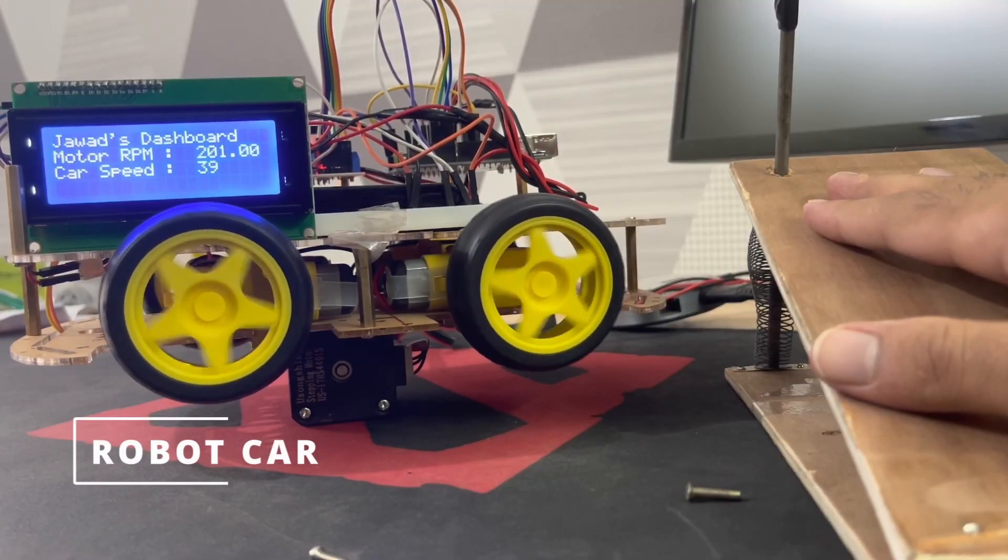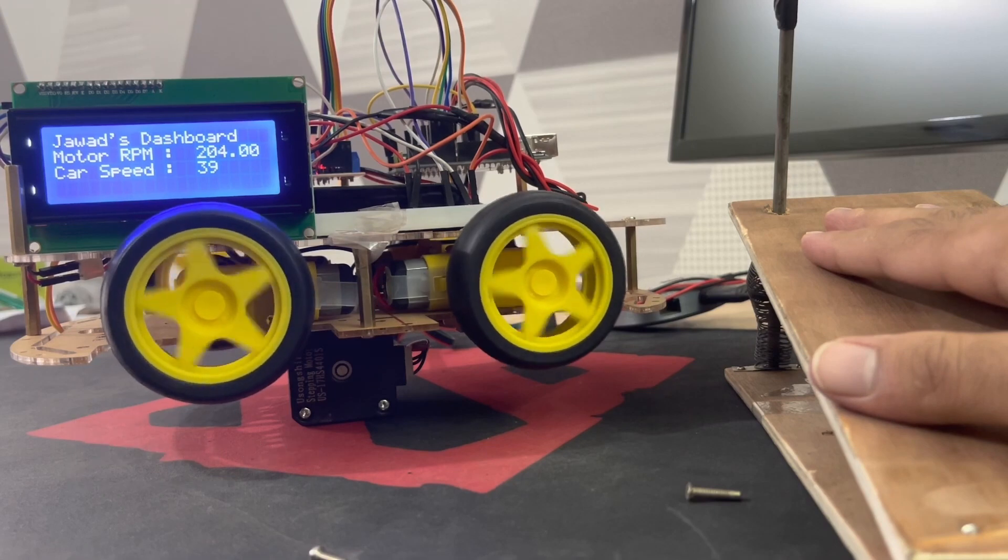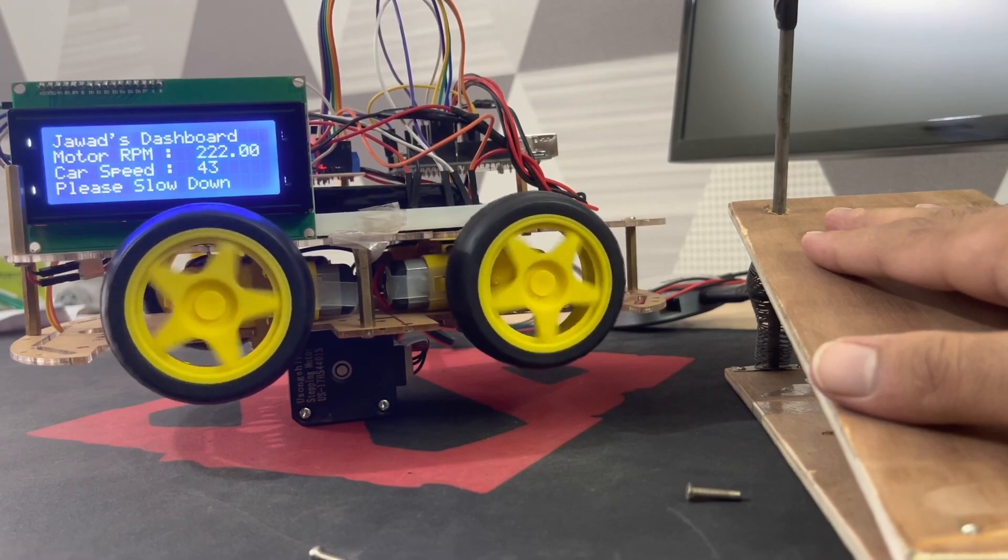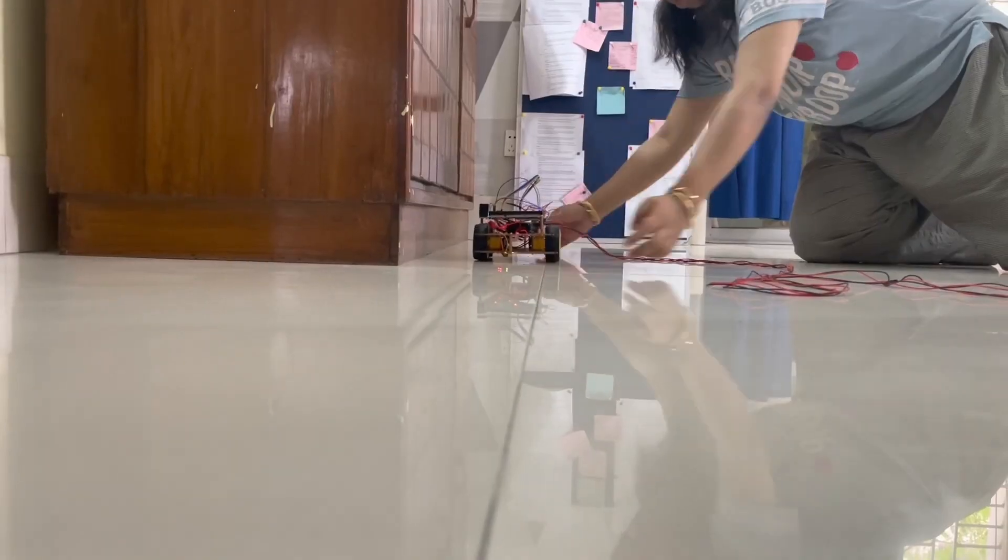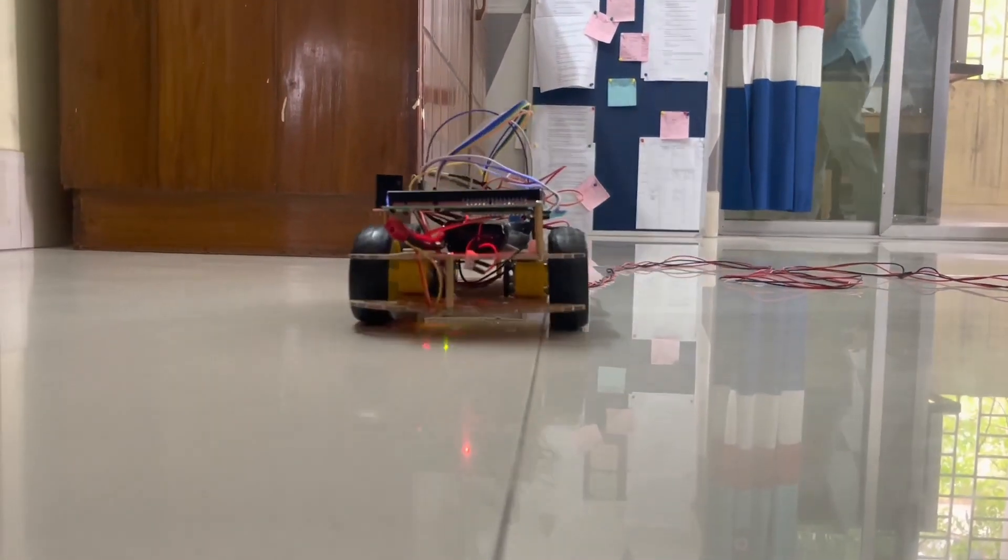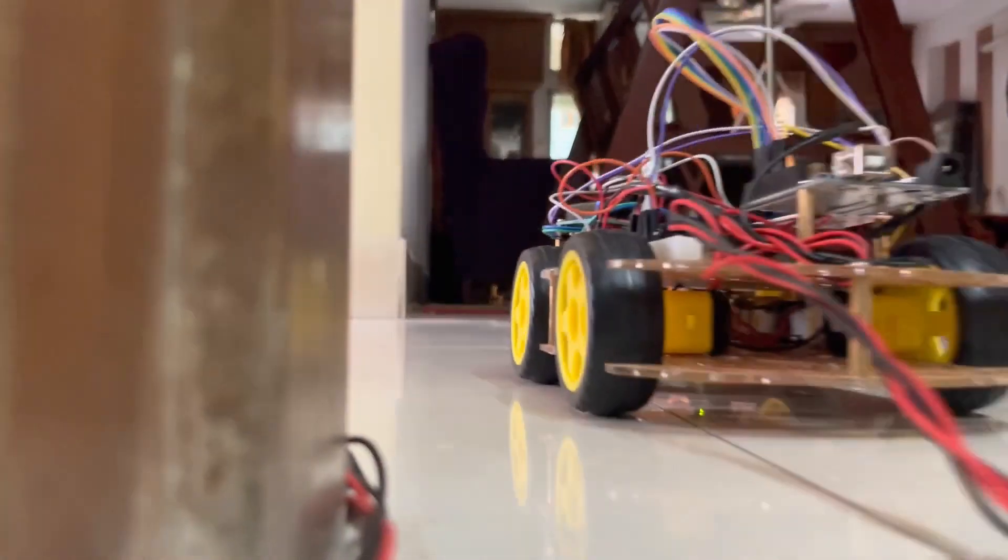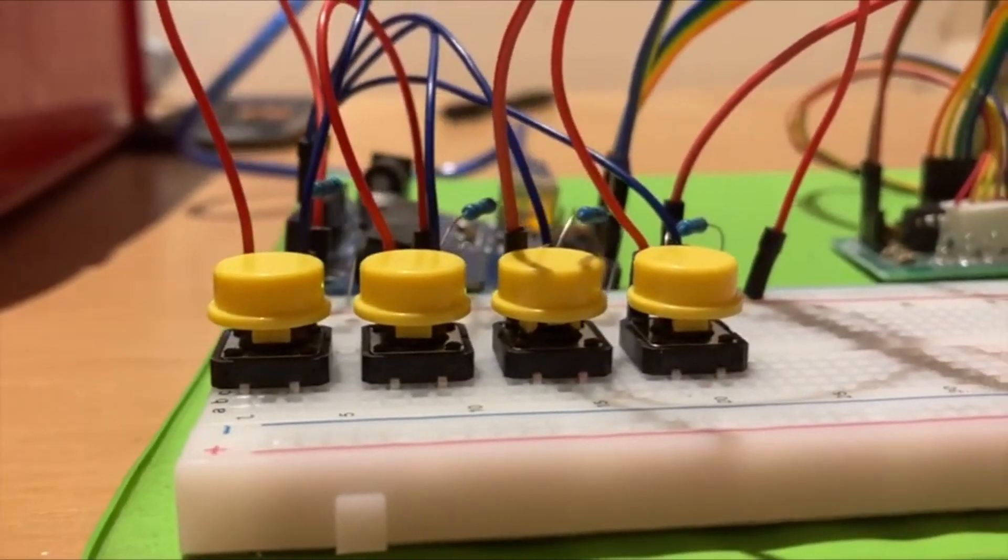The only real constraint was that three discrete subsystems had to be incorporated – an input, some form of actuation, and an output display. This semester yielded a number of amazing projects, a few of which you've seen already. Following are more noteworthy projects.